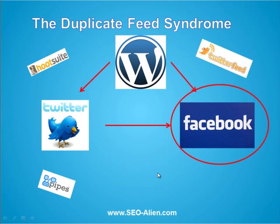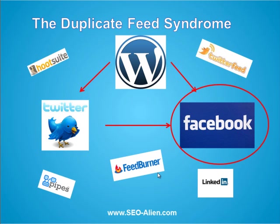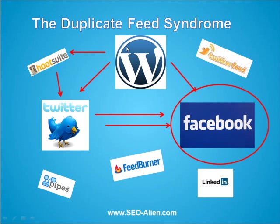Let's throw in tools like HootSuite, Twitter Feed, Yahoo Pipes, FeedBurner, and LinkedIn. You can use all these tools and many more, but it can get complicated. For example, if you use HootSuite to run a feed from your WordPress blog, HootSuite goes to Twitter, and then Twitter goes to Facebook — now you have that duplicate feed going WordPress to HootSuite to Twitter to Facebook. You also have WordPress going directly to Facebook, and WordPress going to Twitter to Facebook. That would result in a triplicate feed on your Facebook page.